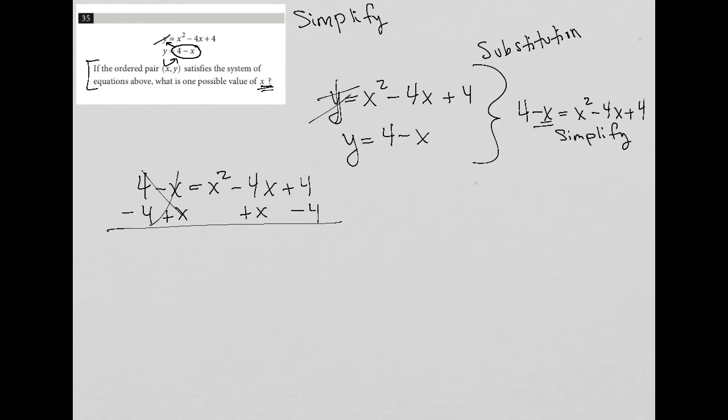Therefore, the left-hand side here is now zero is equal to X squared, negative four X plus X is negative three X and positive four minus four is nothing. So I have, and I'll just rewrite it this way because it's more common to see it this way, X squared minus three X is equal to zero.